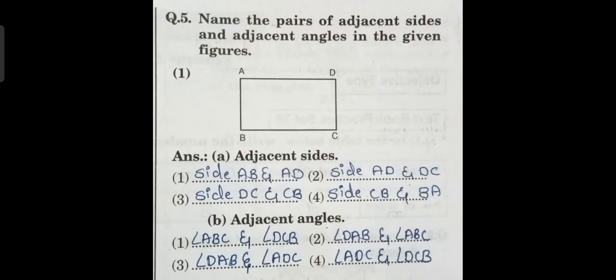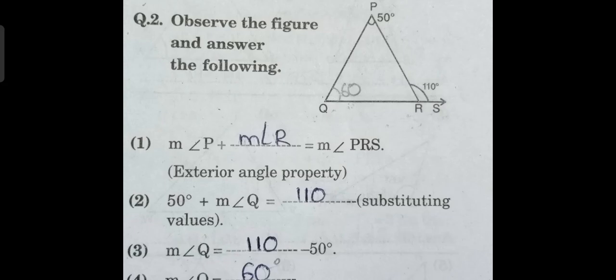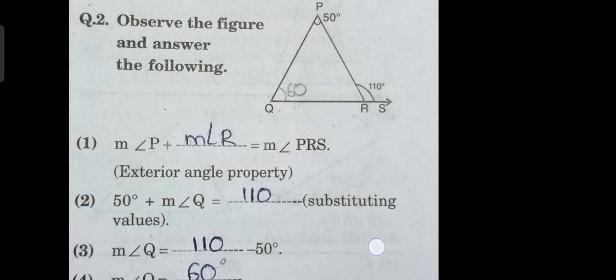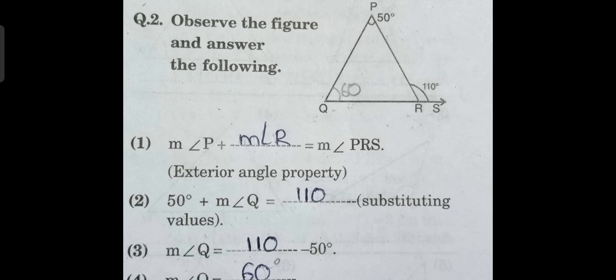Next question: name the pairs of adjacent sides and adjacent angles in the given figures — you have to observe the figure and write the adjacent sides and adjacent angles. Then observe the figure and answer the following questions. All these questions have already been explained; you just have to solve them in your maths notebook. Whatever questions I have explained in this video as a revision part, write them all in your maths notebook. Do well in your exam. Thank you.